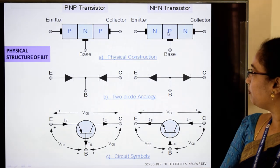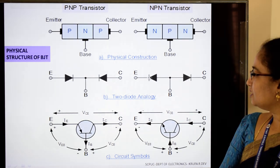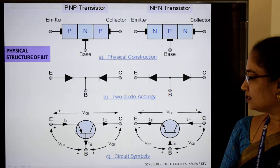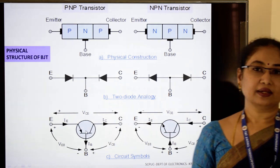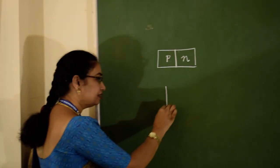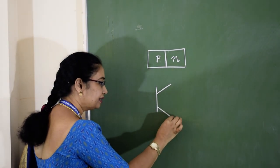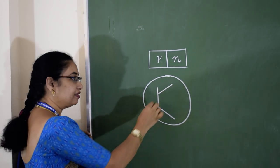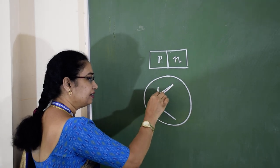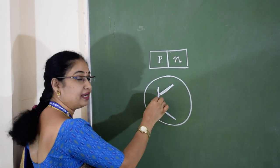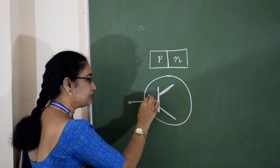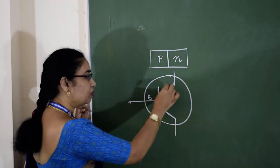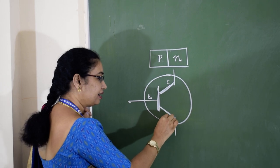Looking at the circuit symbol: a transistor is drawn as a circle with three terminals — base (the middle layer), emitter, and collector. We write three leads: one for base, one for emitter, and one for collector.